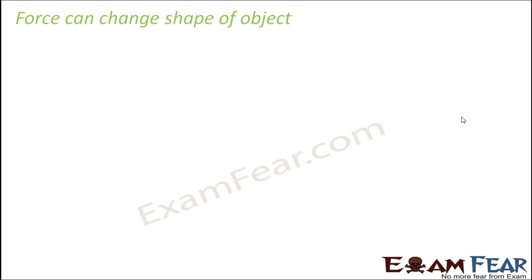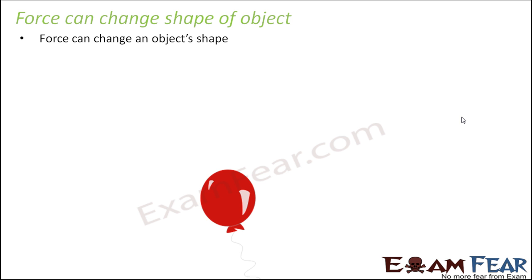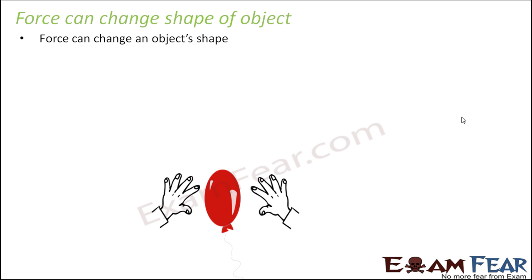Let us see how force can change the shape of an object. Suppose you have a balloon that has already been inflated — a big round balloon. If you apply some force on the balloon by pressing it from both sides using your hands, the shape of the balloon changes. Initially it was spherical; now it becomes oval. So it gets pressed due to the force applied by your hands.